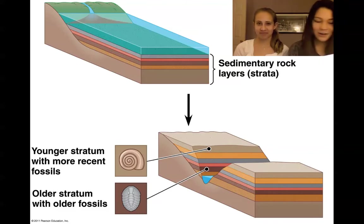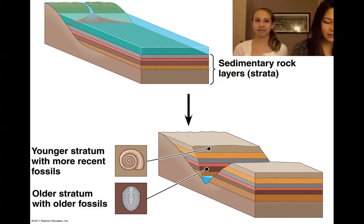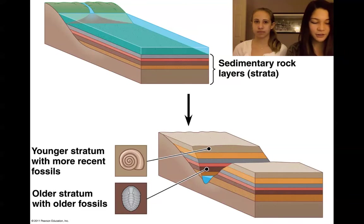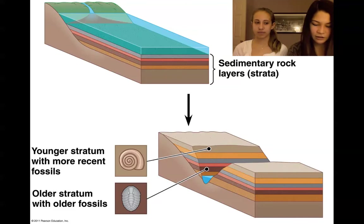Fossils are found in sedimentary rocks that settle. New layers cover older ones and compress them into rocks called strata. Fossils and strata inform us about organisms that populated the earth.